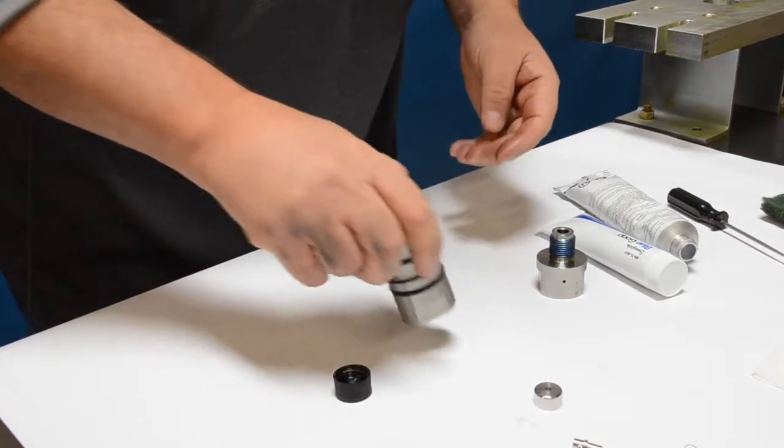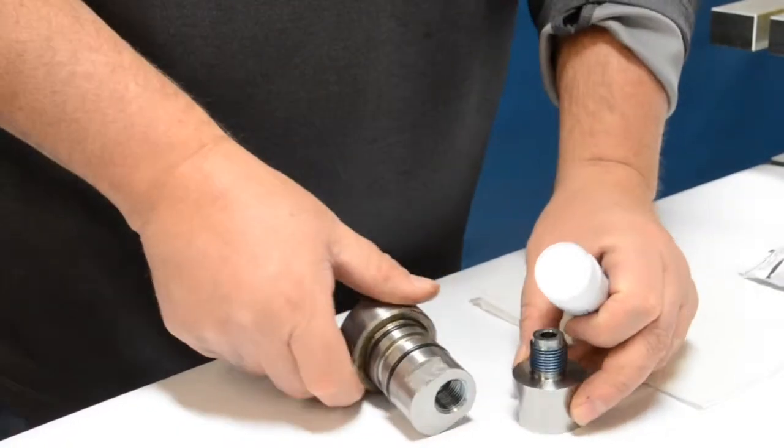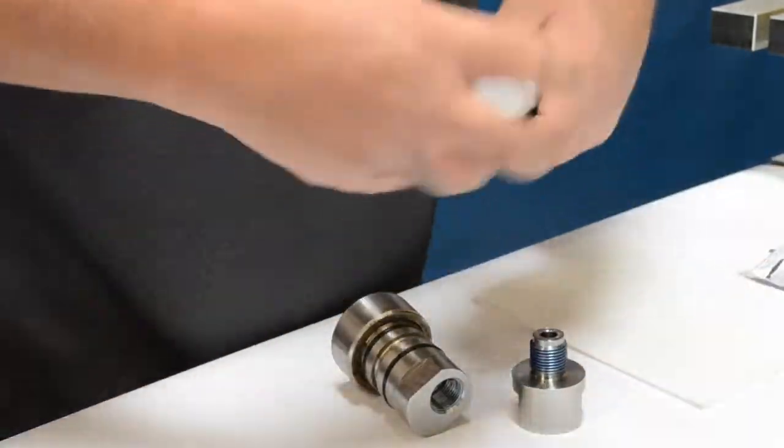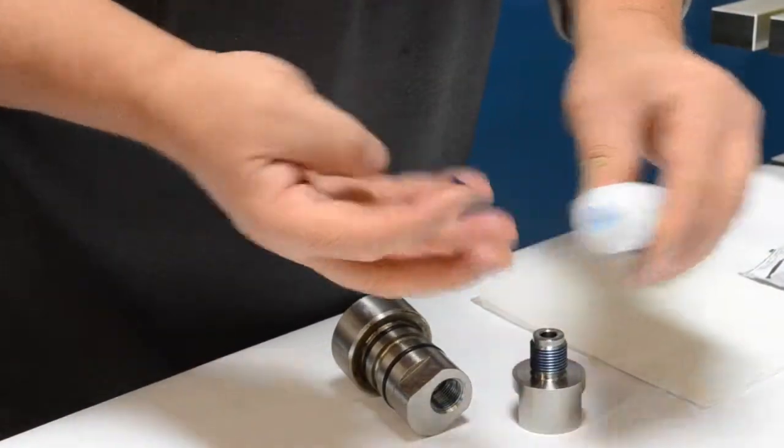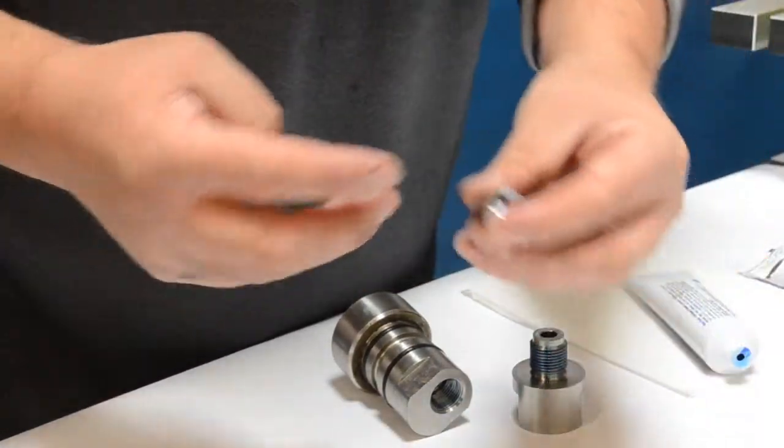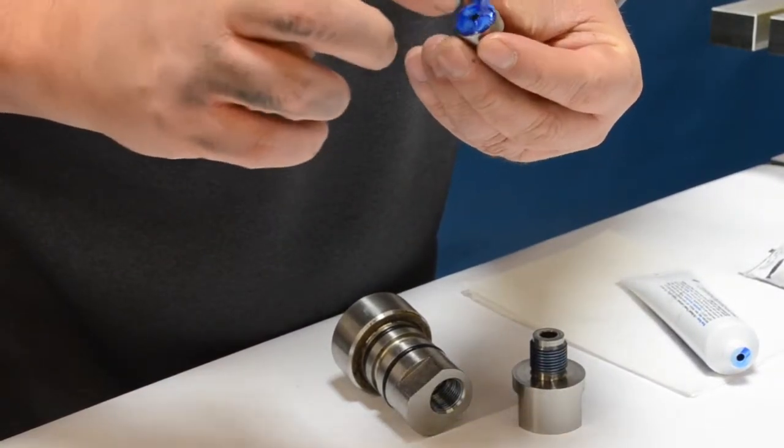Once the o-rings are on, we're going to move to the high pressure side of the check valve. At this point you can get your blue goop ready and your output adapter. We are going to put a little bit of blue goop on our fingers and get ready to put that on to the high pressure seat, on the face of the seat that has the chamfer on it. The flat side does not need any blue goop on it.